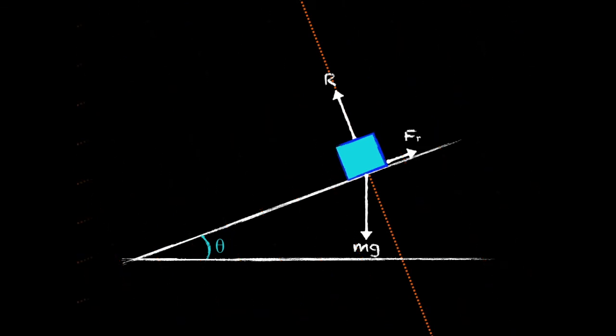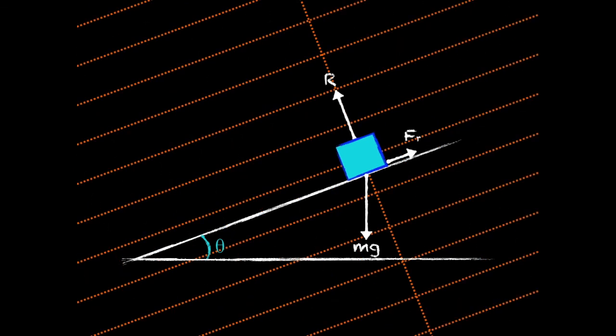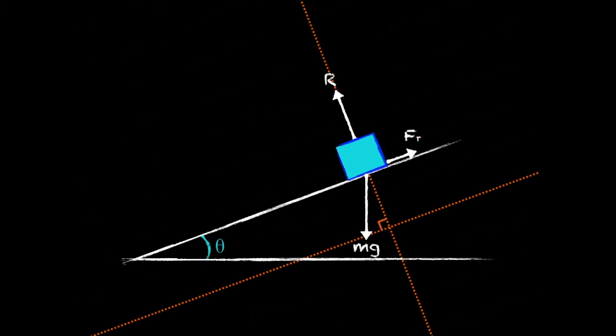The friction is already parallel to the slope, and the normal reaction force is already perpendicular to the slope. So the only force that we need to fiddle with is the weight.